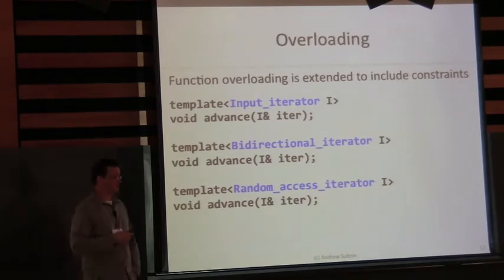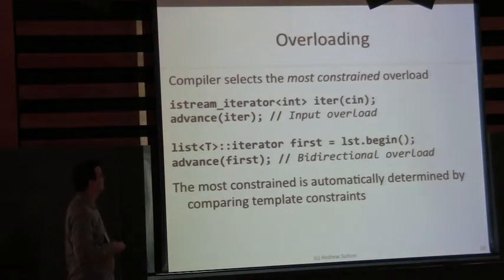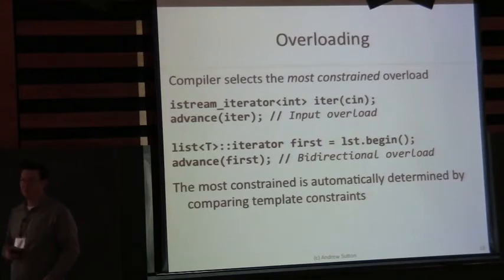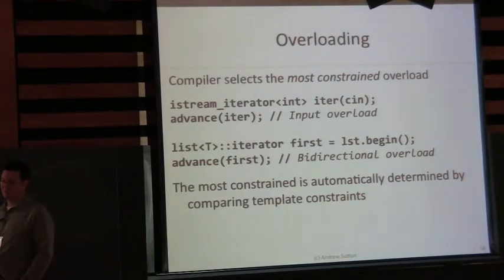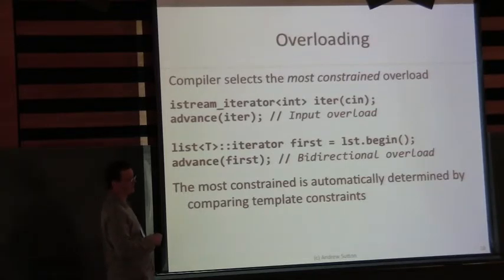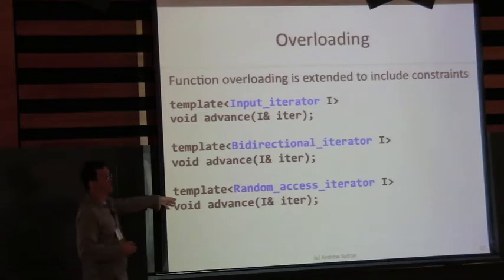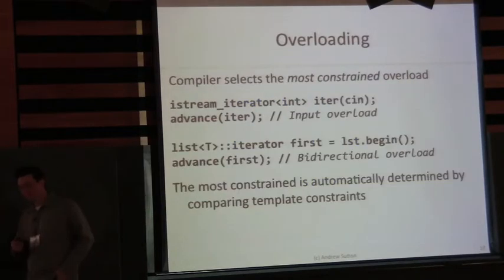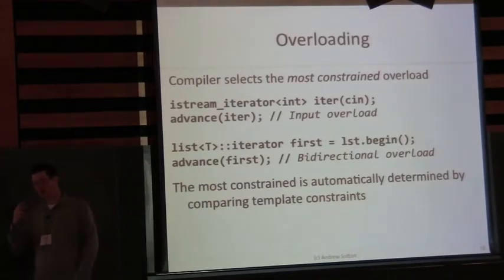We can overload on constraints. Here's a version of advance with three declarations. If we call advance with an input iterator — an istream_iterator which is only an input iterator — we get the first overload. An istream_iterator is not a bidirectional or random access iterator, so there's only one viable candidate. If we call it with a list iterator, we have an interesting situation: bidirectional iterators are also input iterators, so we have two viable candidates — the first and the second. Bidirectional iterators are not random access iterators, so the third is non-viable. We modify the definition of most-specialized declaration to find the most constrained by comparing template constraints.